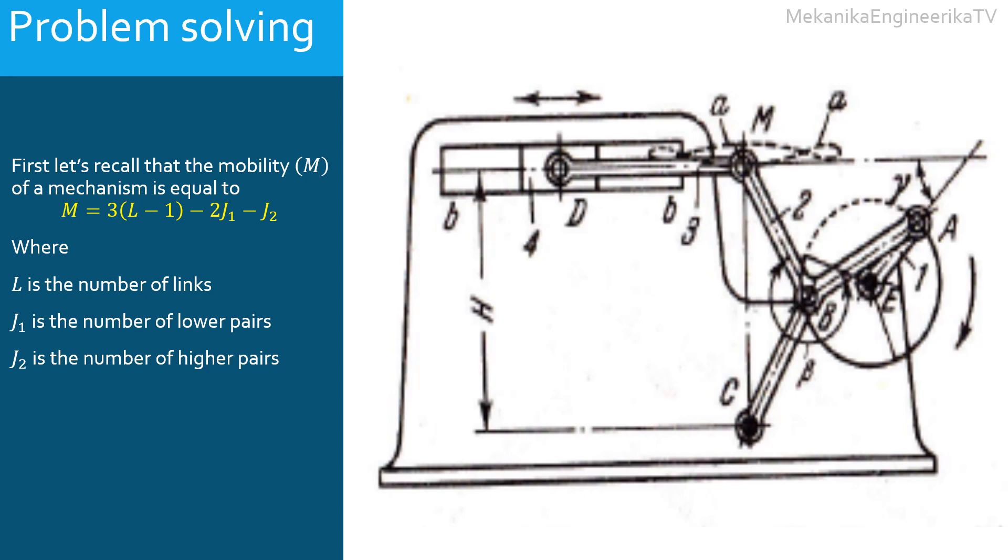This mechanism is built from several bars or binary links. First there is the bar AE, then there is also the bar BC, and finally there is the bar DM. In all, the mechanism has three bars.